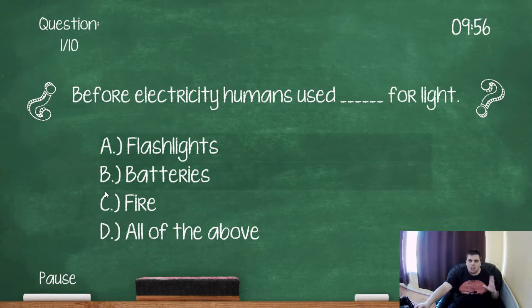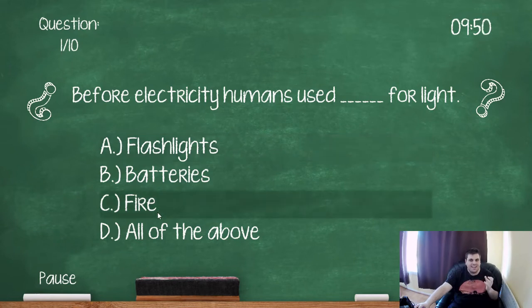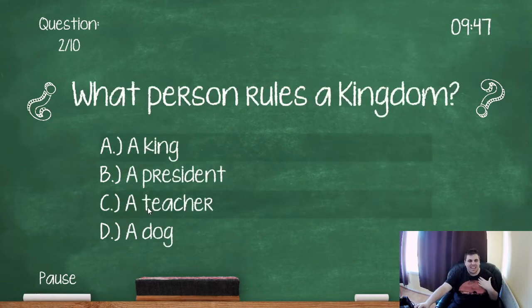Before electricity, humans used what for light? Well, fire. What person rules a kingdom? So, a king, a president, a teacher, a dog. It should be C. It should be a teacher. But it's a king. Kingdom.